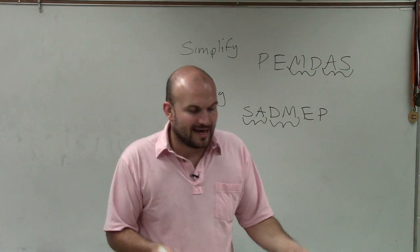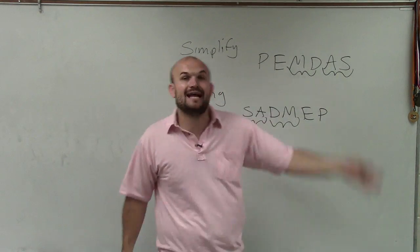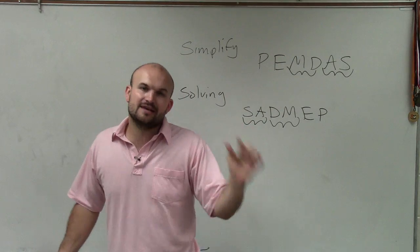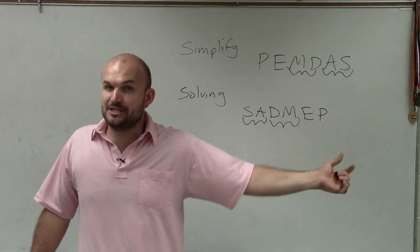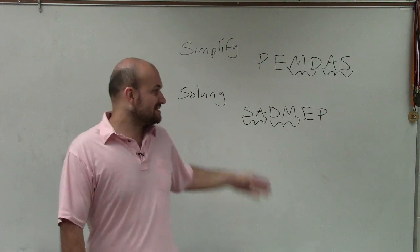So again, when you have an equation and you look at a variable and you see that that variable is being multiplied by a number and added by a number, we're going to want to use the inverse operation to undo the addition first and then undo the multiplication. And that's going to work.